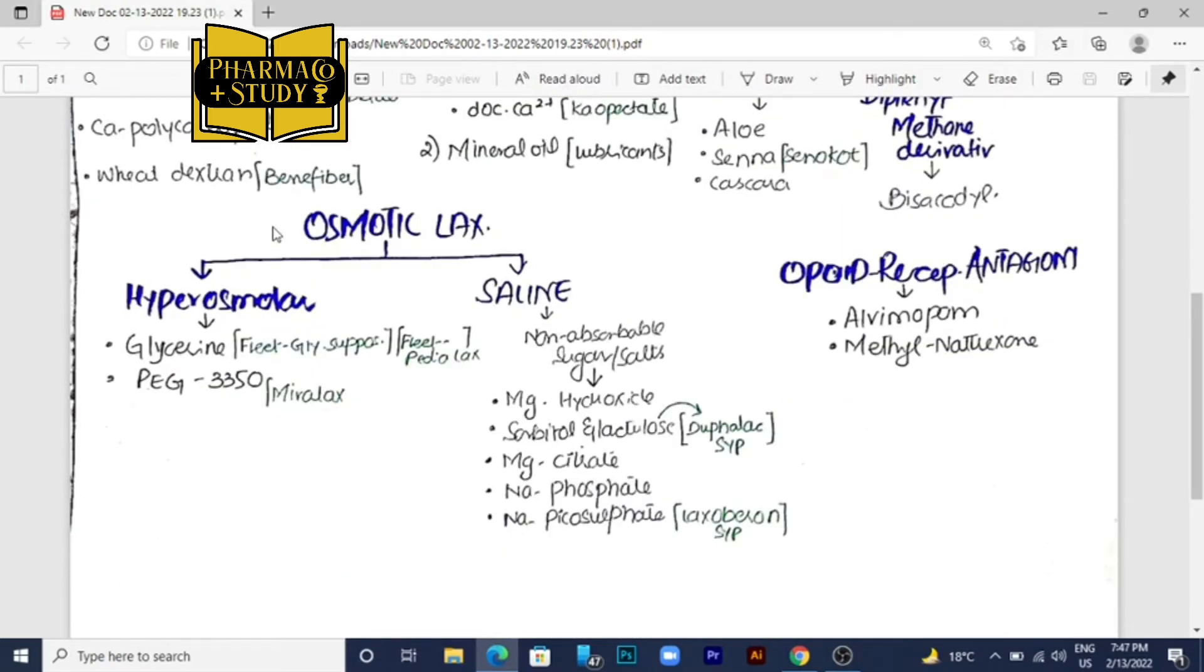Then comes the osmotic laxatives. In osmotic laxatives we have two classes: hyperosmolar and saline laxatives. In the hyperosmolars we will study glycerine that comes under the name Fleet glycerine suppositories and PediLax, and the other one is polyethylene glycol 3350 which comes under the name Miralax. We will discuss all these drugs and the reference will be from CPR, Comprehensive Pharmacy Review.